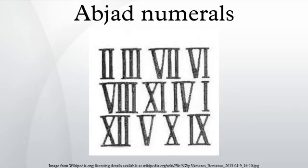The Arabic abjad system continues at this point with letters not found in other alphabets — tha equals five hundred, etc.